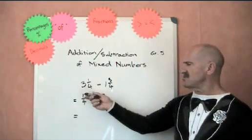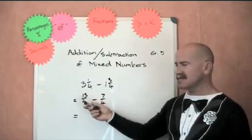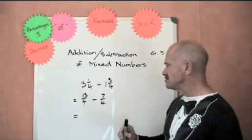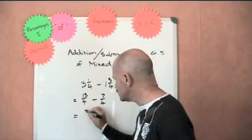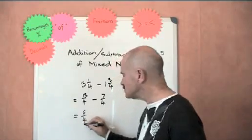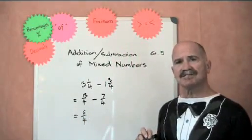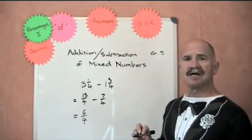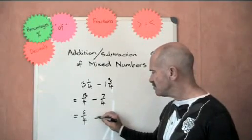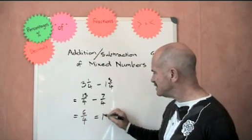Now we've got 13 quarters, take away 7 quarters, which is 6 quarters. It's much easier to do. And of course, 6 quarters is the same as 1 and 2 quarters.